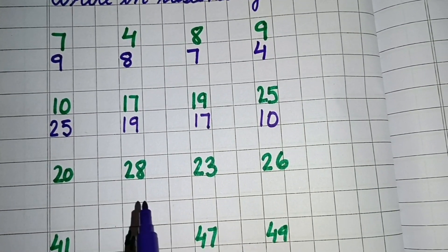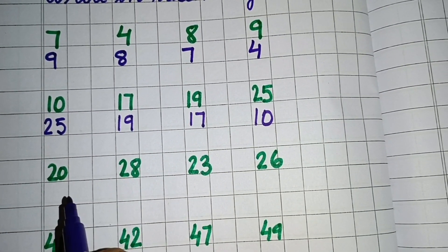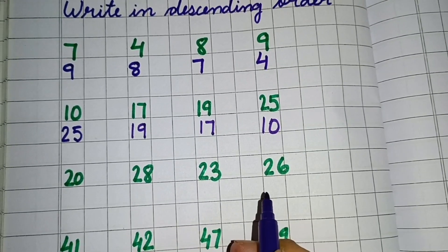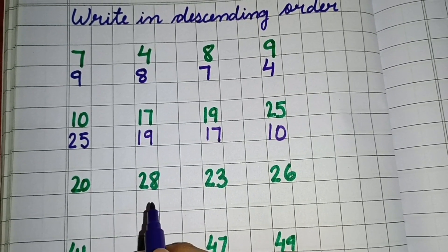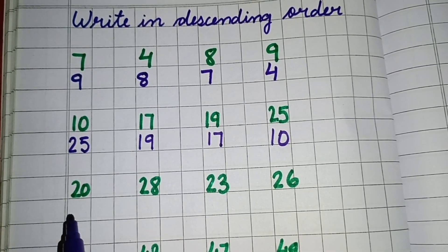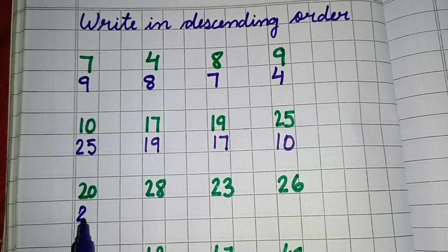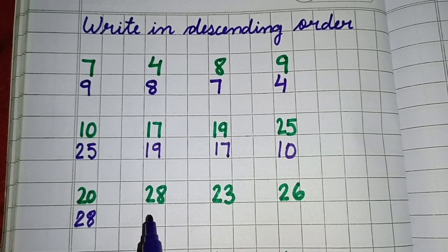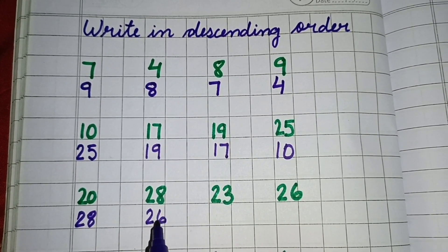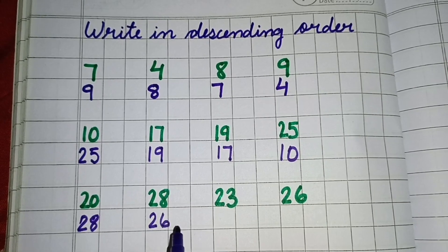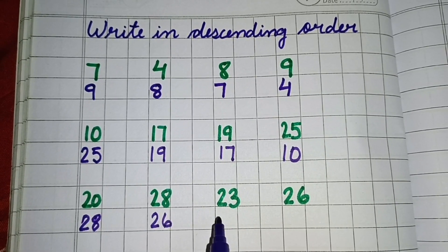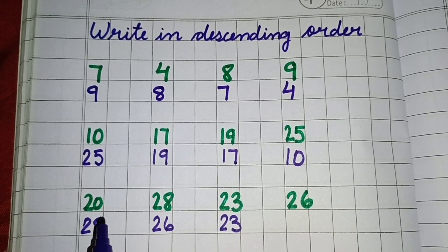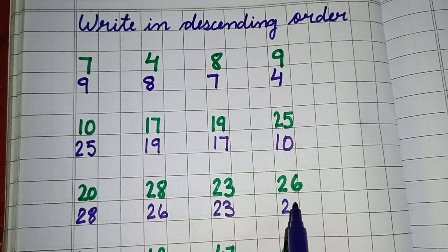Now next we have 20, 28, 23 and 26. So the biggest number is 28. So we will write here 28. After that we have 26, so we will write here 26. Next we have 23, so we will write here 23. And then at last we will write here 20.